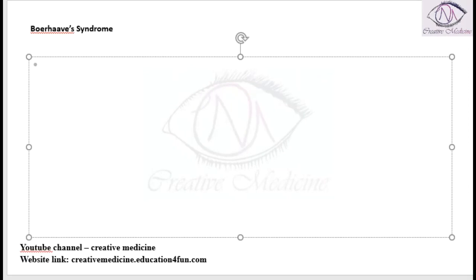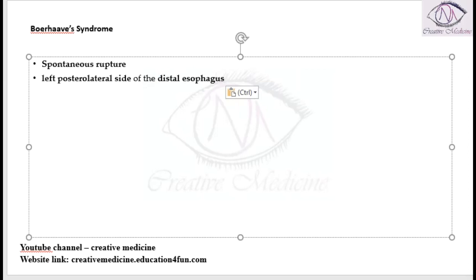What is Boerhaave syndrome? Boerhaave syndrome is actually a spontaneous rupture that occurs in the left posterior lateral side of the distal esophagus. This rupture occurs into the left pleural cavity, so that the contents will flow into the left pleural cavity.